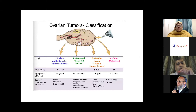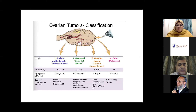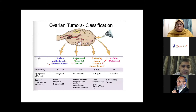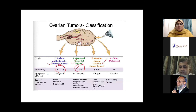Coming to ovarian tumor classification, as already alluded to by Dr. Jaya and various other speakers — as far as pathology is concerned, there are epithelial tumors, germ cell tumors, and the less common sex cord stromal tumors. Sixty to seventy-five percent of ovarian cancers are of the carcinoma group, and about 15 to 20% are of the germ cell category.